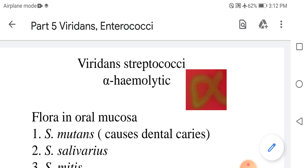This is part five of the topic Streptococcus species. It is about viridans streptococci and enterococci. We start with viridans streptococci.